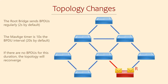So it will need to make this new interface the root port. But remember, there can only be one root port per switch, so the other port loses its root port status. As it represents an alternate path to the root bridge, there is a loop and that will need to be blocked.